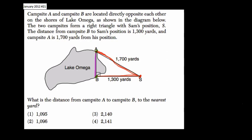I would set this up using the Pythagorean theorem: one leg squared plus the other squared equals the hypotenuse squared. This long side opposite the 90-degree angle is the hypotenuse. We're missing a leg, so we have A squared plus 1,300 squared equals 1,700 squared.